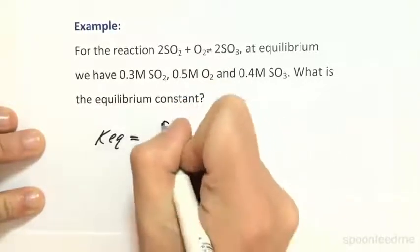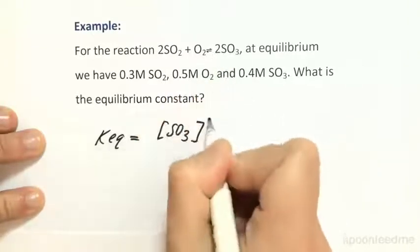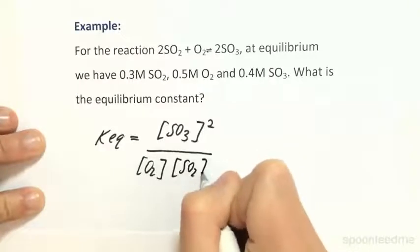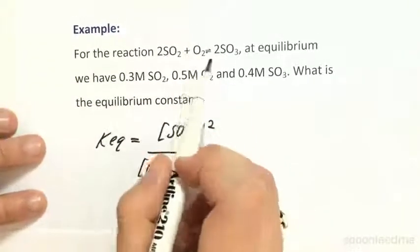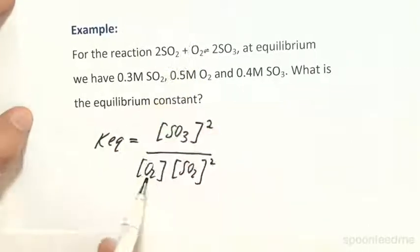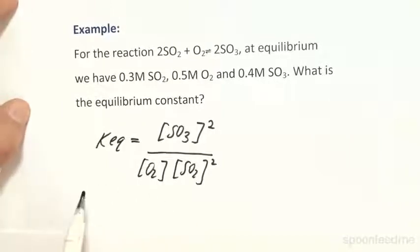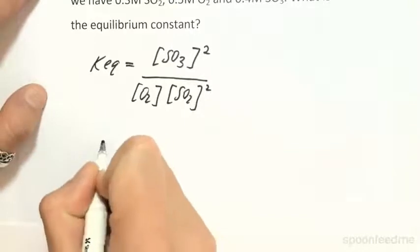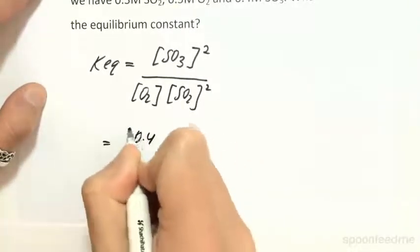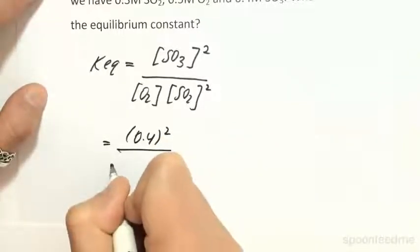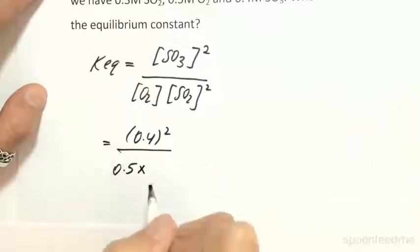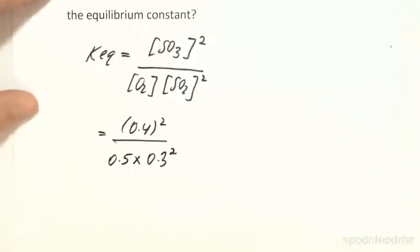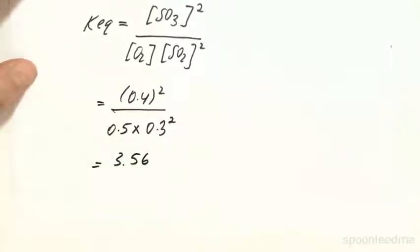Keq equals the concentration of SO₃ to the power of 2 — because there's a 2 in front of it — over the concentration of SO₂ to the power of 2, multiplied by the concentration of O₂ to the power of 1. Substituting in the values: (0.4)² divided by (0.3)² times (0.5). Throwing that into the calculator, we find that equals 3.56. And that is your equilibrium constant.